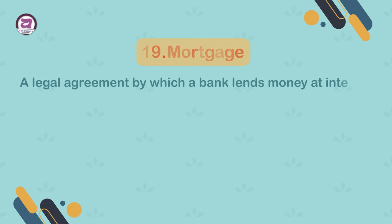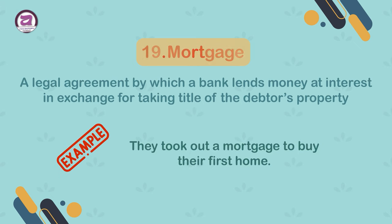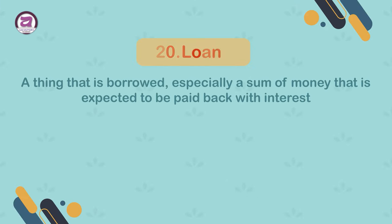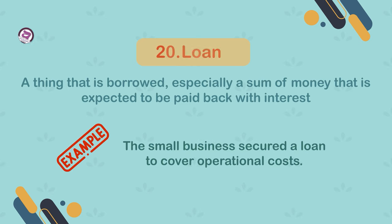19. Mortgage. A legal agreement by which a bank lends money at interest in exchange for taking title of the debtor's property. Example: they took out a mortgage to buy their first home. 20. Loan. A thing that is borrowed, especially a sum of money that is expected to be paid back with interest. Example: the small business secured a loan to cover operational costs.